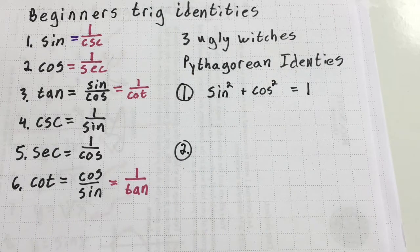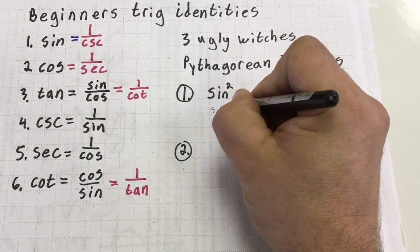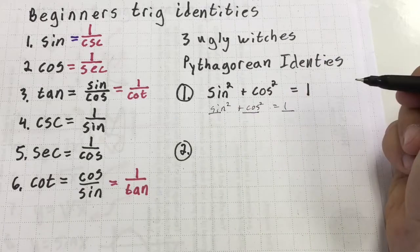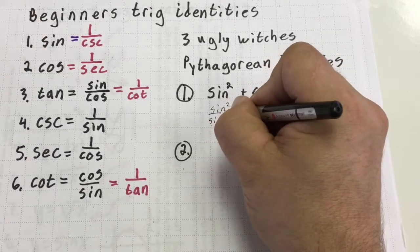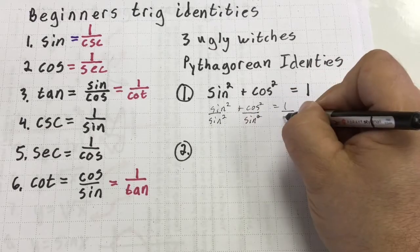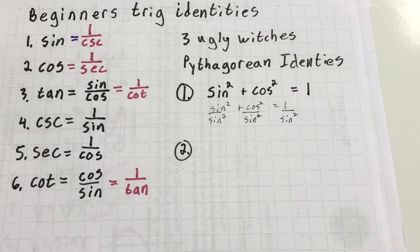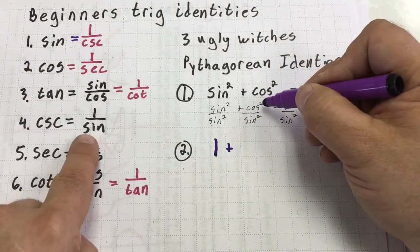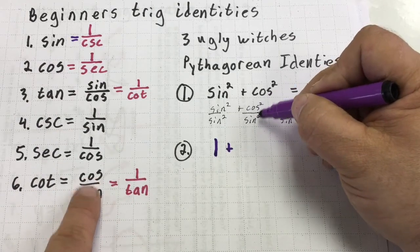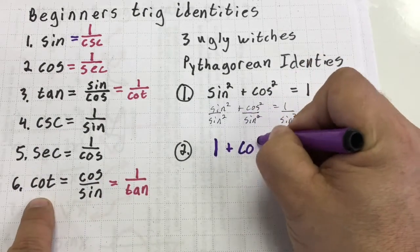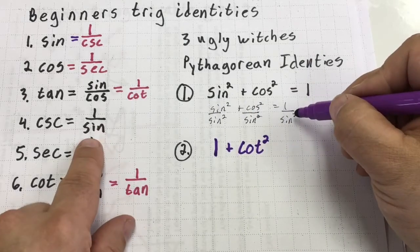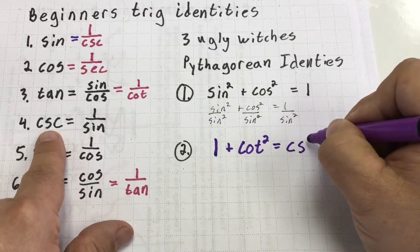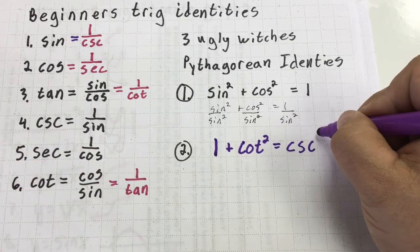To get the second Pythagorean identity, I'm going to rewrite the original: sine squared plus cosine squared equals one, and then divide each term by sine squared. Sine squared divided by sine squared is just one. Cosine squared over sine squared gives me cotangent squared. And one over sine squared gives me cosecant squared. So the second Pythagorean identity is: one plus cotangent squared equals cosecant squared.